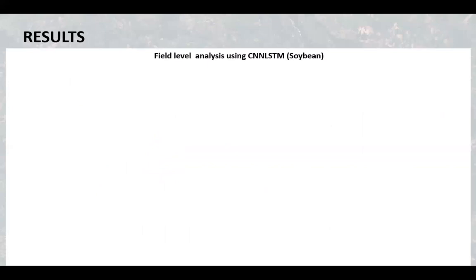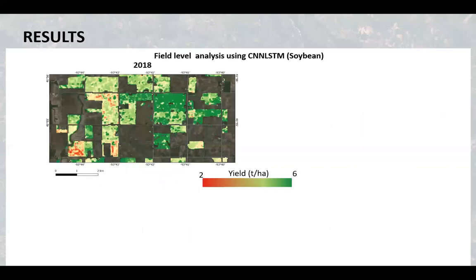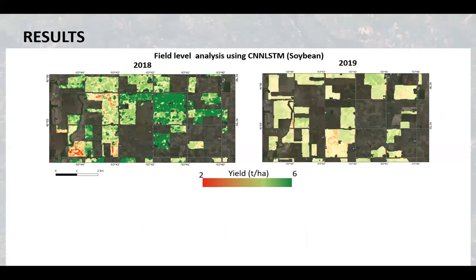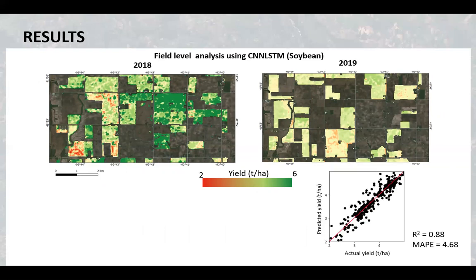For field level analysis, the models had similar performance and accuracies. Here we can see an example for soybean with the CNN-LSTM model. The accuracies were high with a percentage error around four. At a field level, the spatial patterns of estimated yields could well capture the spatial heterogeneity and yield differences among individual fields.